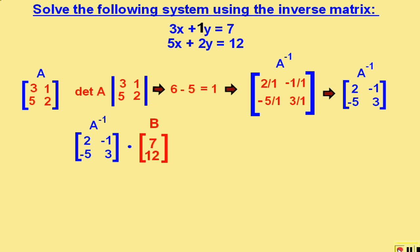We now multiply that inverse matrix by matrix B, and matrix B is found by using these numbers.